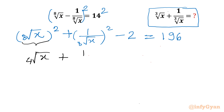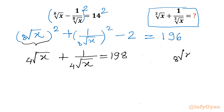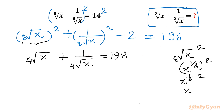So we have 4th root of x plus 1 over 4th root of x equal to 196 plus 2, which is 198. To explain: 8th root of x whole square is x to the power 1 over 8, whole power 2. Using the exponent law, we multiply the powers to get x to the power 1 over 4, which is nothing but 4th root of x. We will call this equation number 1.